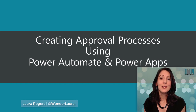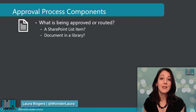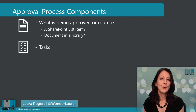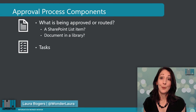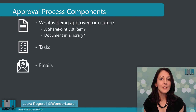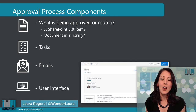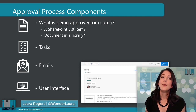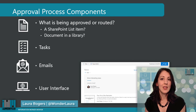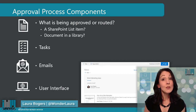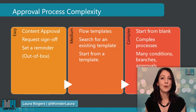Our business processes are going to be unique and varied, so at the beginning of the workshop we'll talk about the components of an approval process — the thing that is being approved, any potential tasks and emails involved, approvals that are sent out, and the concept of having some sort of user interface around the files or forms being approved.